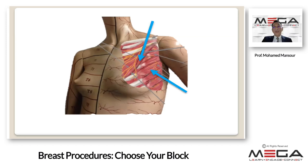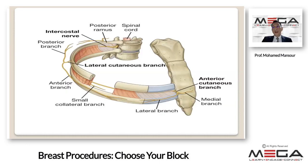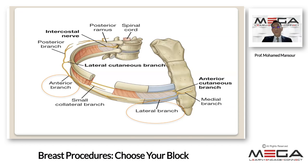For PECS-2, the first part is similar to PECS-1. In addition, a local anesthesia injection is made between the pectoralis minor and the serratus anterior at the third rib level. With this block, the lateral branches of T2 to T4 spinal nerves and possibly the anterior branches will be blocked if sufficient local anesthesia penetrates the external intercostal muscles. By entering the axilla, the long thoracic nerve may also be blocked.